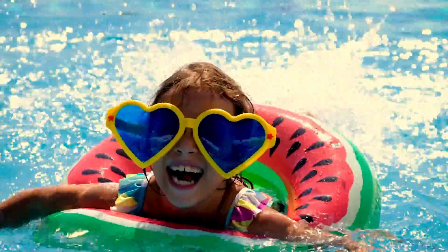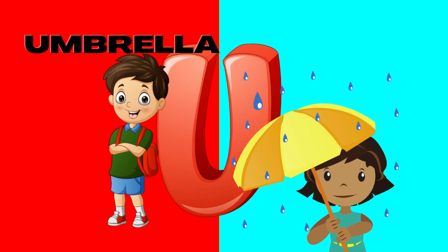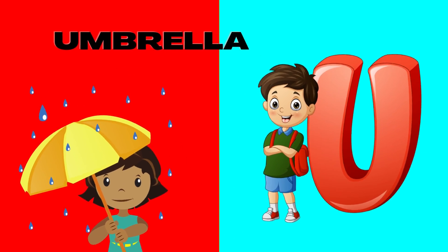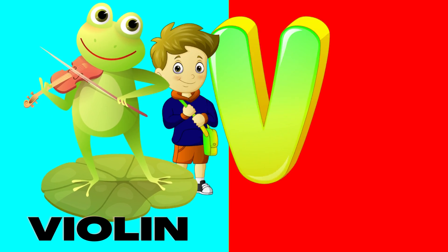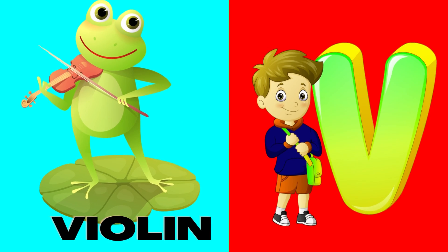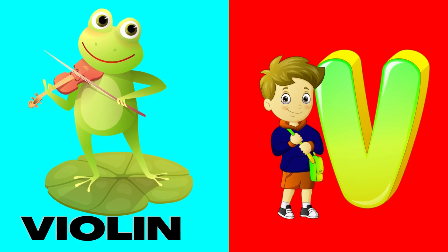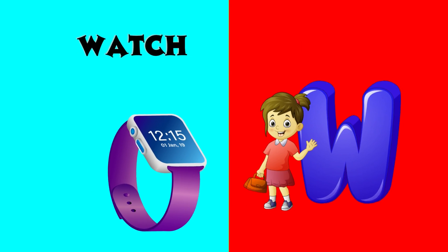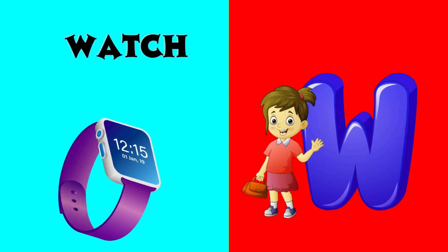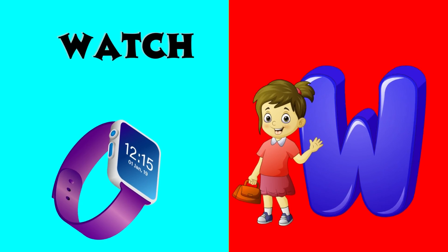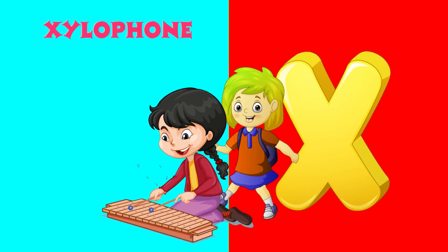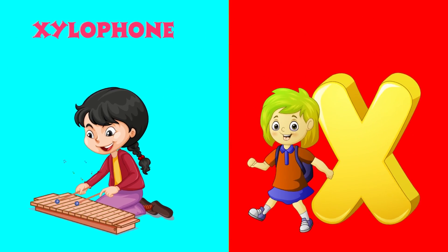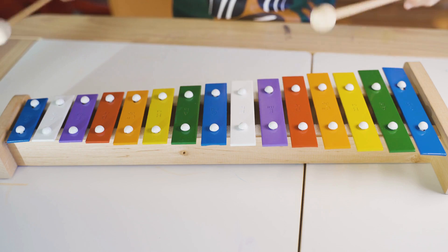U is for umbrella, u-u-umbrella. V is for violin, v-v-violin. W is for watch, w-w-watch. X is for xylophone, x-x-xylophone.